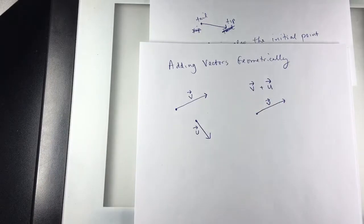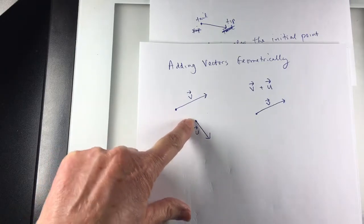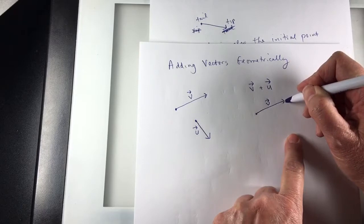And then I'm going to take U and draw U, but I'm going to put the tail of U on the tip of V.